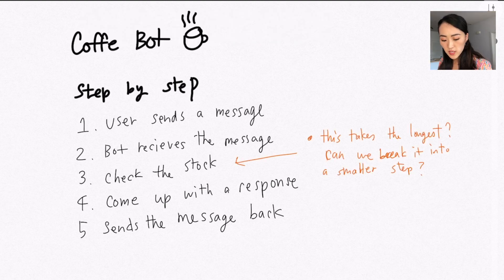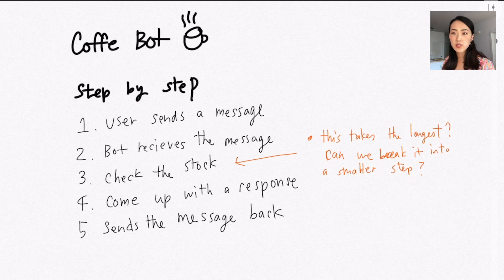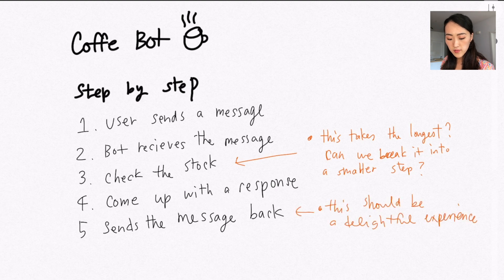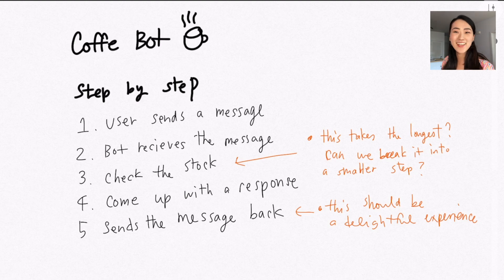For step three, checking the stocks — I think this is where it takes the longest, so we need a way to engage users while we make them wait. And step five should be the most delightful part of the experience. So how might we make that fun?